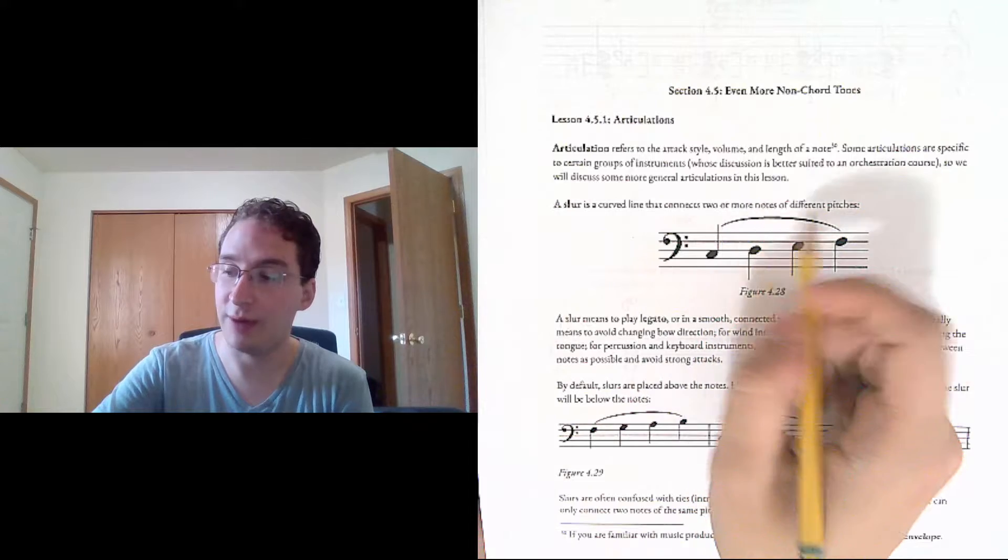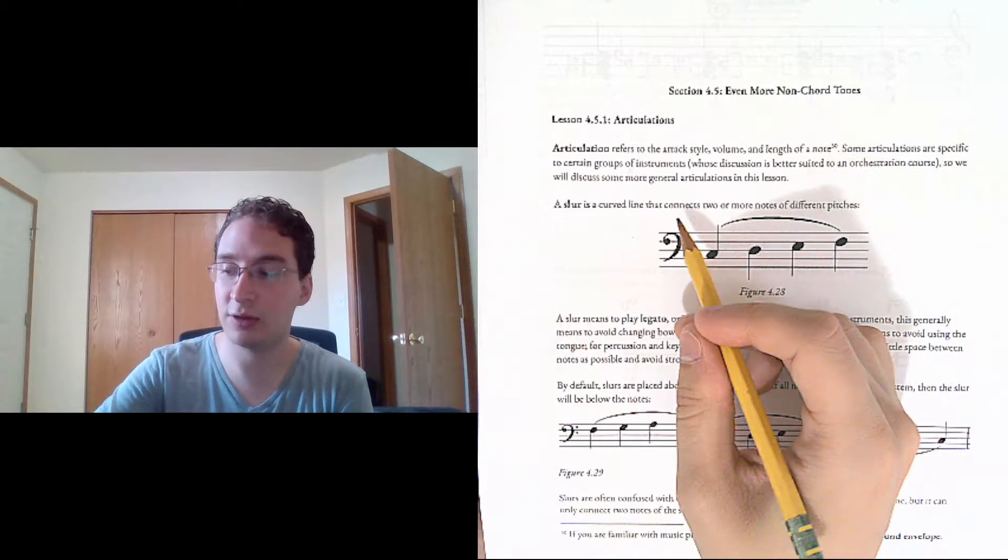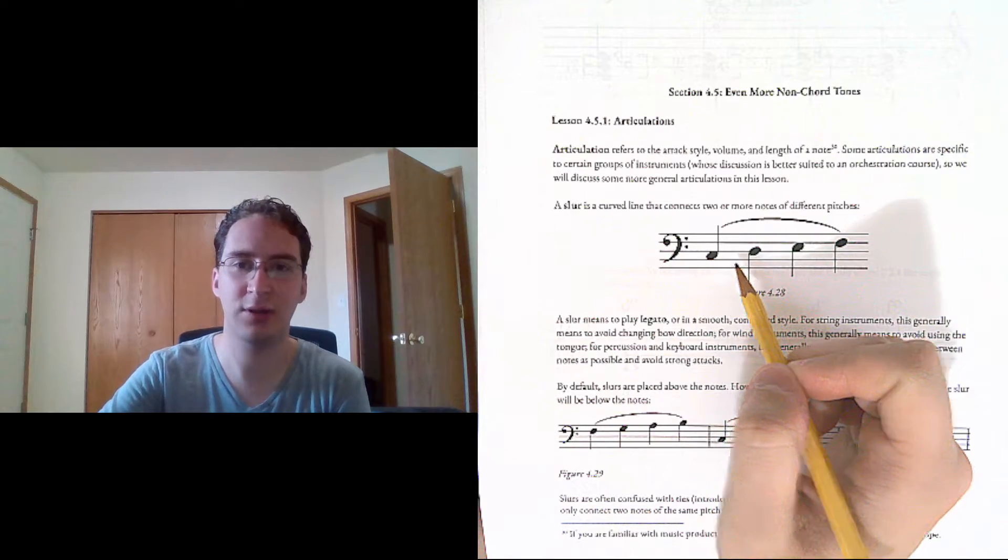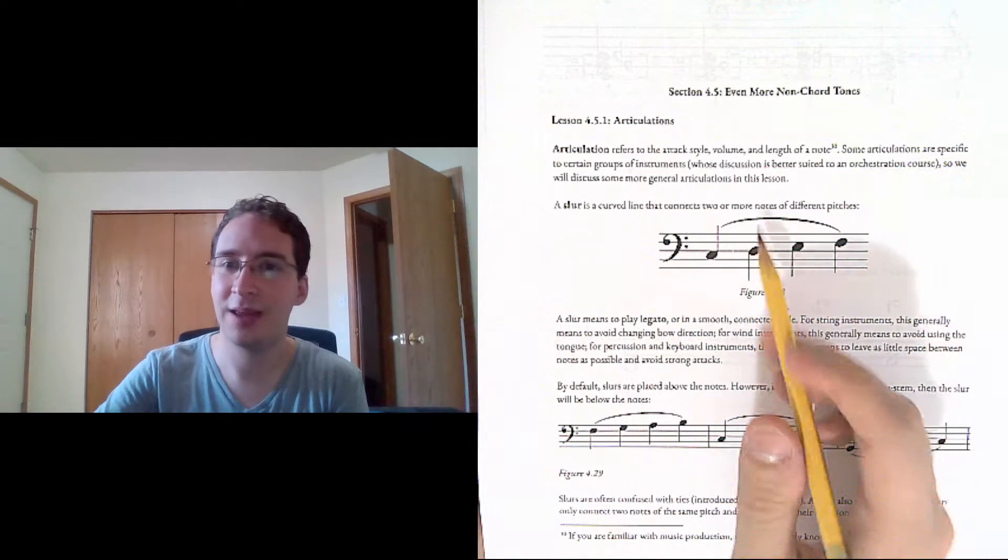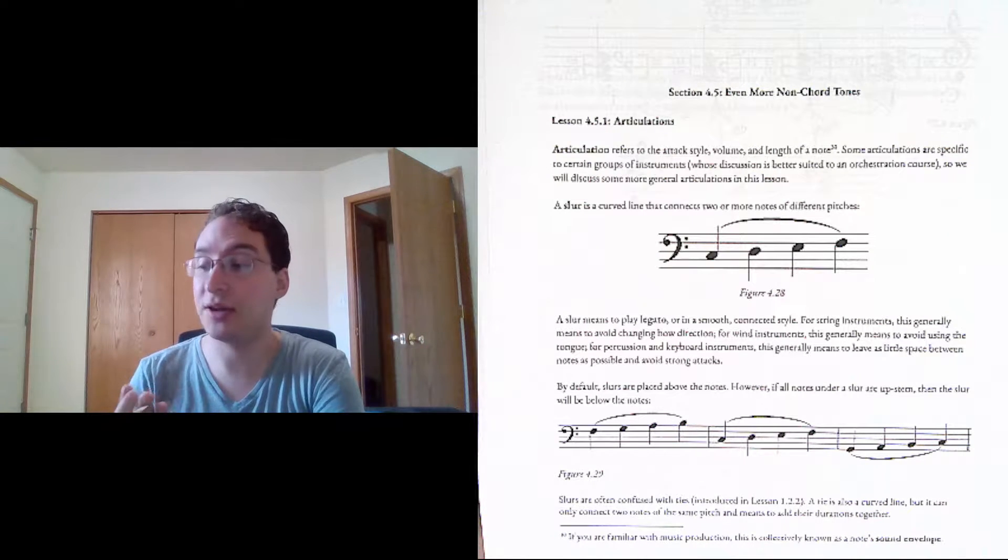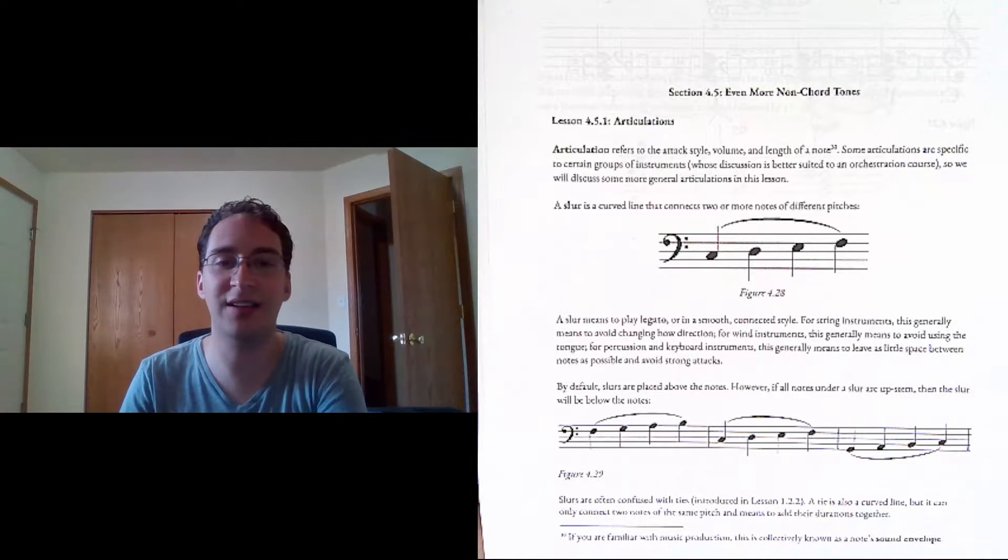The first articulation we're going to worry about is a slur. This is a curved line that connects two or more notes of different pitches. So that's a slur, but what does it do? It means to play legato, or connected, a smooth, connected style.